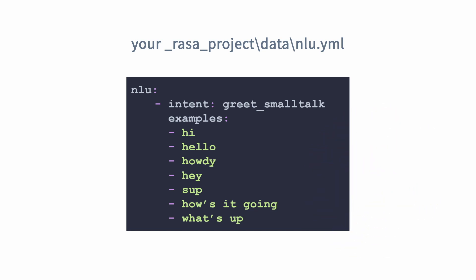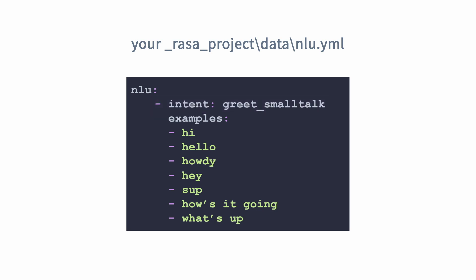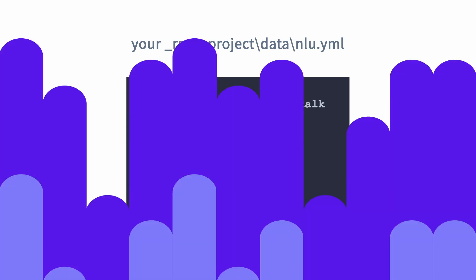For example, the intent is greet_small_talk — just saying what's up or howdy. The examples are things the user might say to the assistant: hi, hello, howdy, hey, sup, how's it going, and what's up.